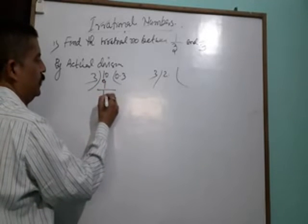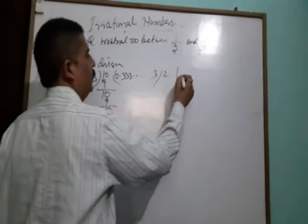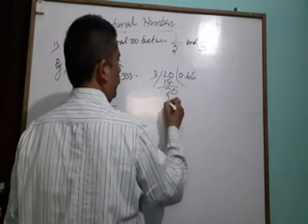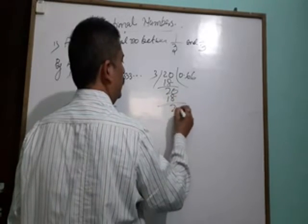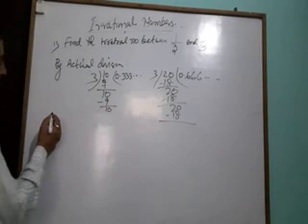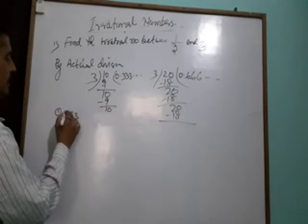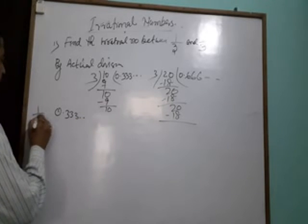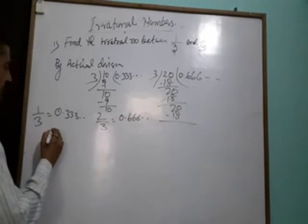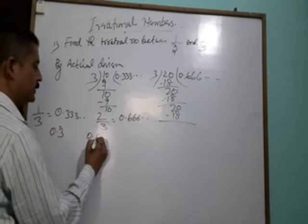0.3 repeating, 9 into 10, 3 into 9, 1 into 0. So the value is 0.333 repeating, which is 1 by 3. 2 by 3 equals 0.666, also written as 0.6 dot.